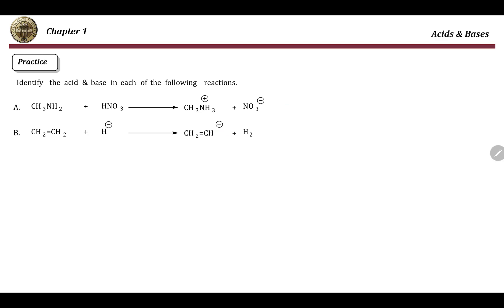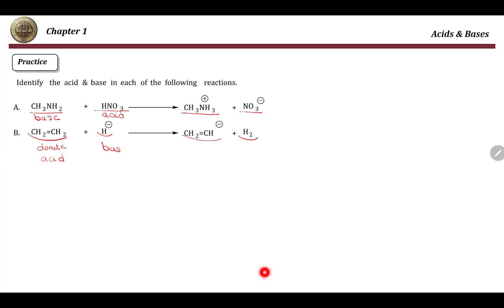Looking at these two final equations: in the first equation, CH3NH2 accepted an H+ so this is the base, and HNO3 lost an H+ so this is the acid. In the second example, comparing the structure of this compound before and after, this compound donated one of its hydrogens so it is the acid, whereas H minus accepted a hydrogen to become H2, and that's why this is the base.